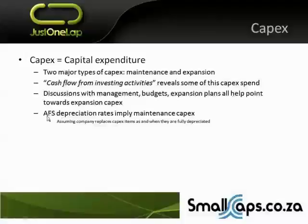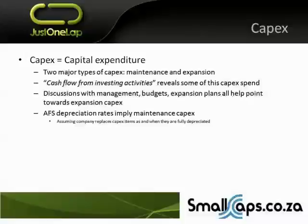For maintenance CAPEX, a rule of thumb is that depreciation rates imply the CAPEX spend. Assuming a company replaces its CAPEX items as and when they are fully depreciated, its depreciation should start to match its maintenance CAPEX. For example, if a car has an economic useful life of 10 years, you depreciate it over 10 years, and the maintenance spend to keep it running for those 10 years will roughly match that — not perfect, but you can get a baseline from the financial statements.